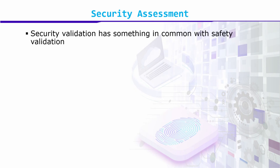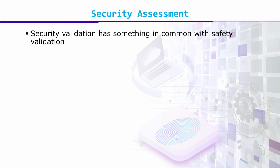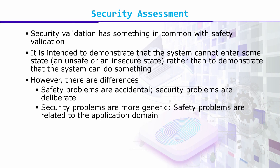Security validation has something in common with safety validation: it is intended to demonstrate that the system cannot enter some state which is unsafe or insecure, rather than to demonstrate that the system can do something different. However, there are differences — safety problems are accidental, whereas security problems are deliberate. For example, a security breach is deliberate.